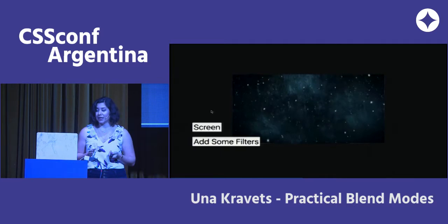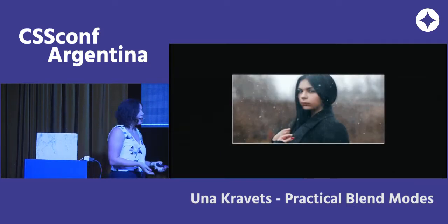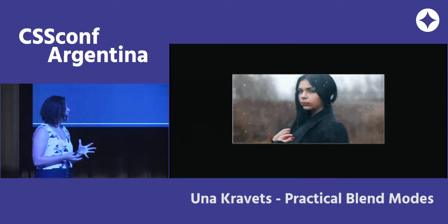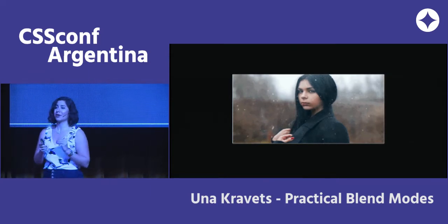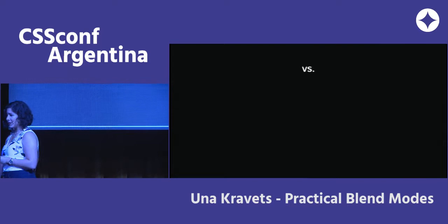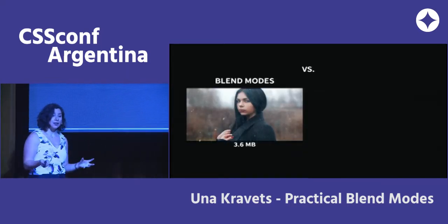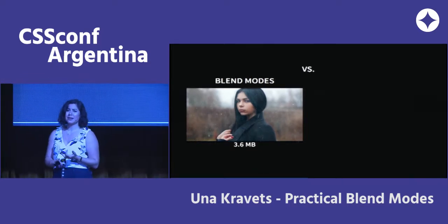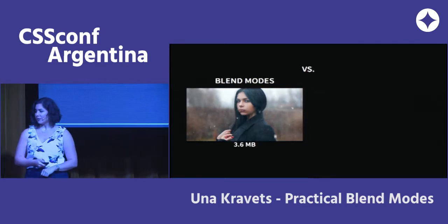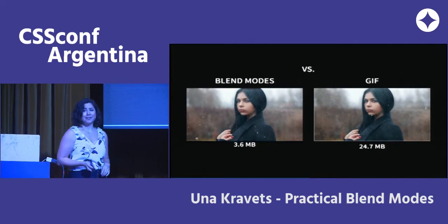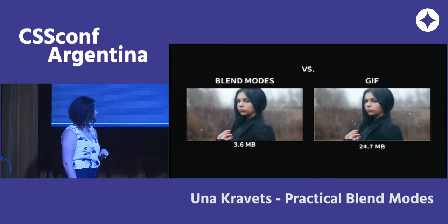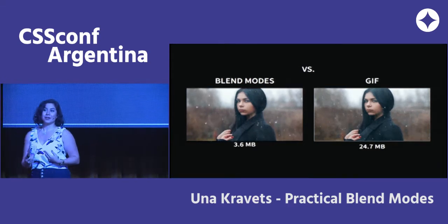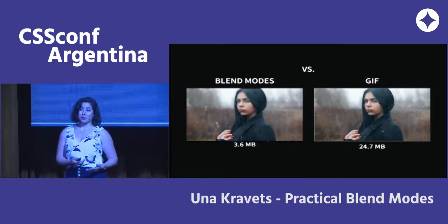I wanted to see what this looked like in a GIF format, so I recreated the same thing in a GIF. It's kind of janky — you lose a lot of colors, and the file size is incredibly large. The blend mode version was 3.6 megabytes as a large image with an MOV file, but when converted to GIF it was 24.7 megabytes. Nobody wants to serve that. There are ways to use this to your benefit and make it much more performant.